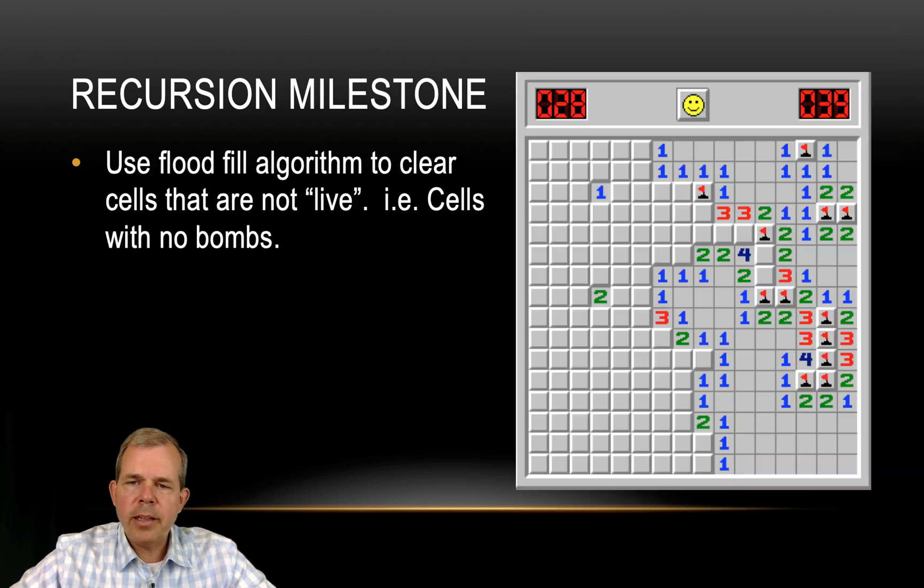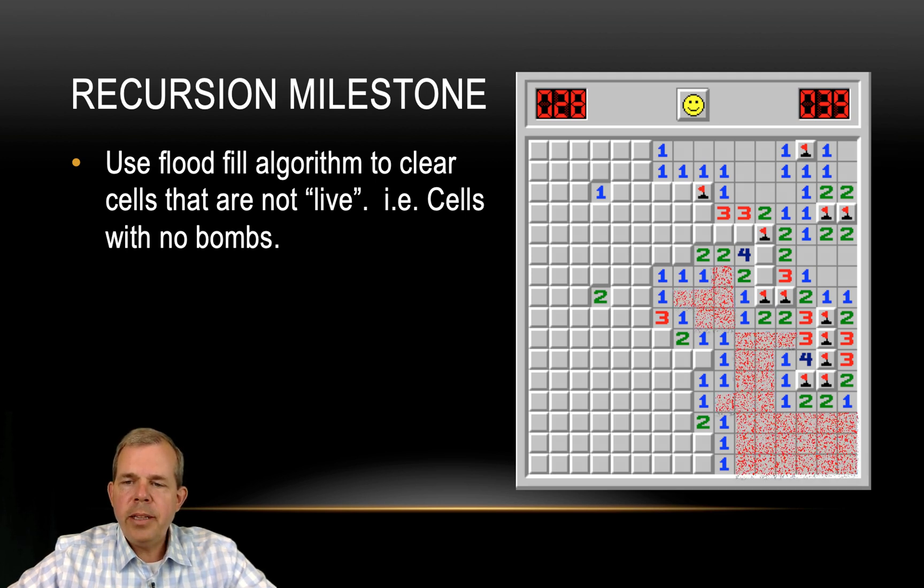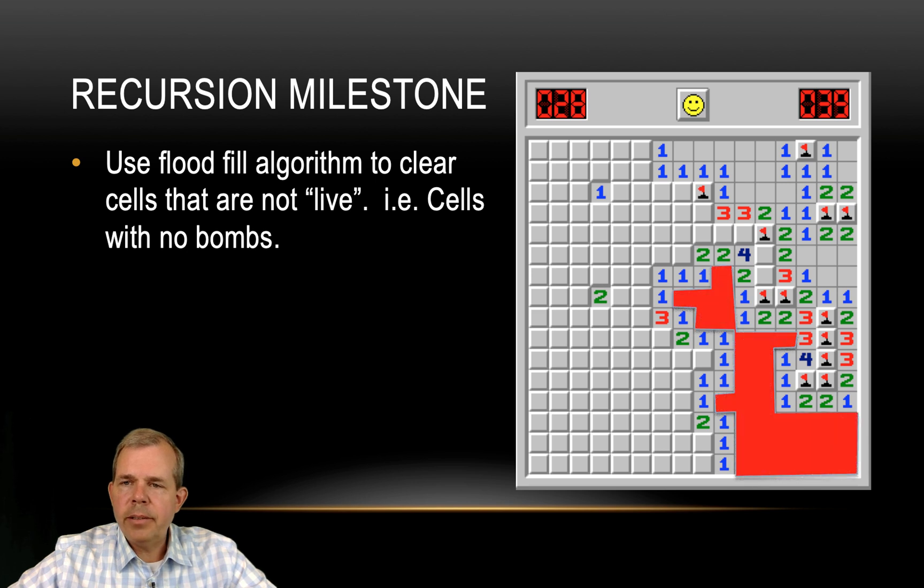This will work exactly as you would expect in the recursion of a milestone of our Minesweeper program. In Minesweeper, if you click and there are no bombs nearby, the whole area is cleared and shown to be free of bombs. We're going to program this as our recursion flood fill code for Minesweeper.